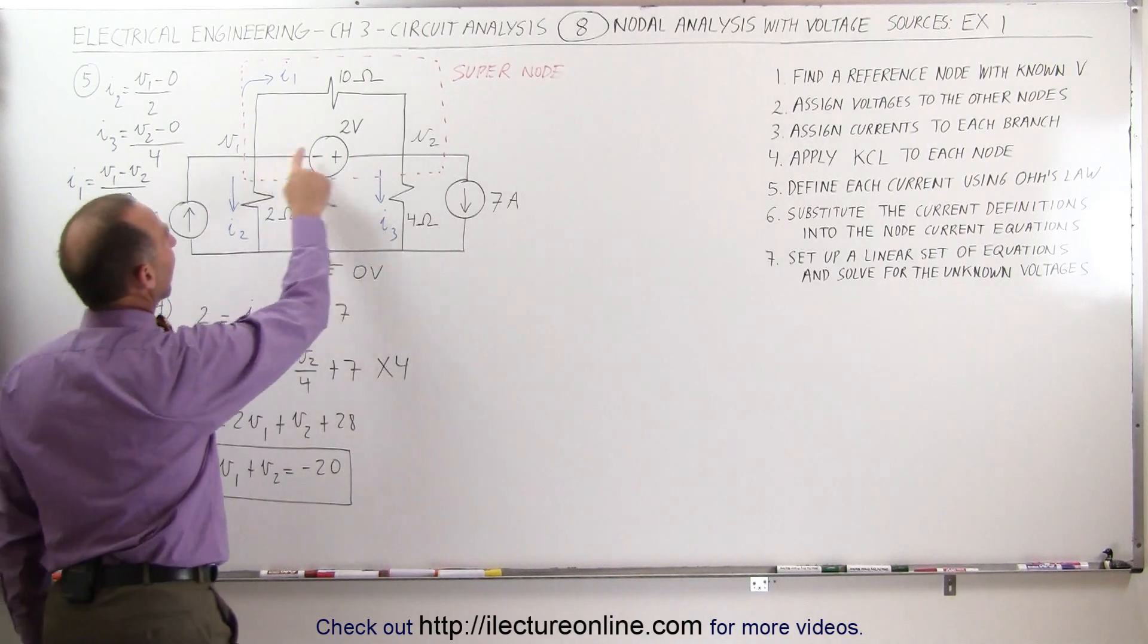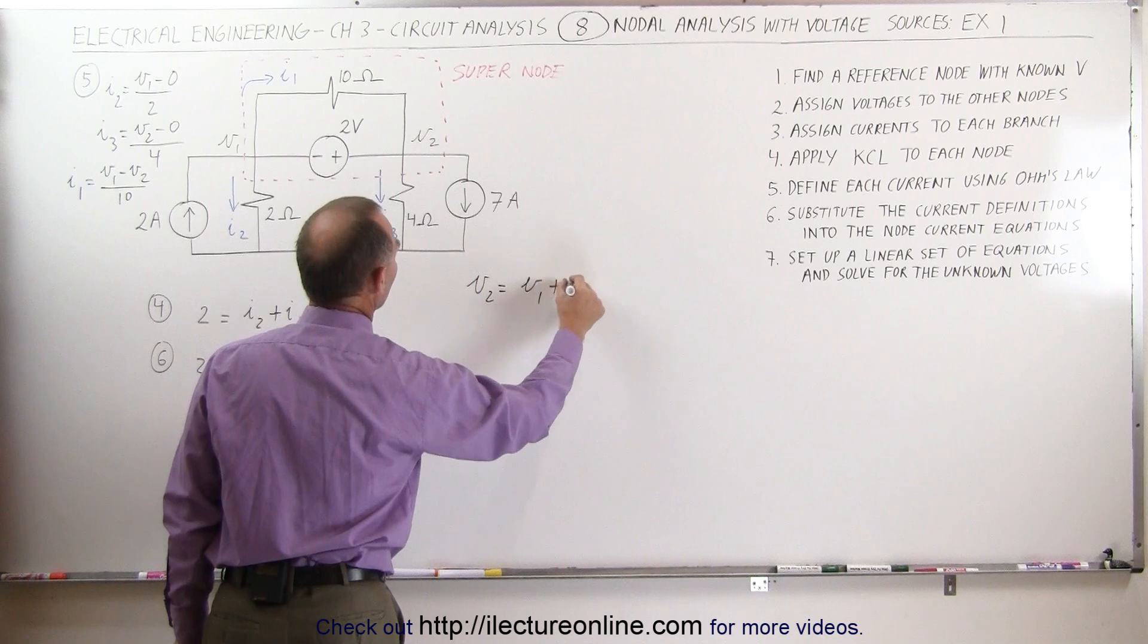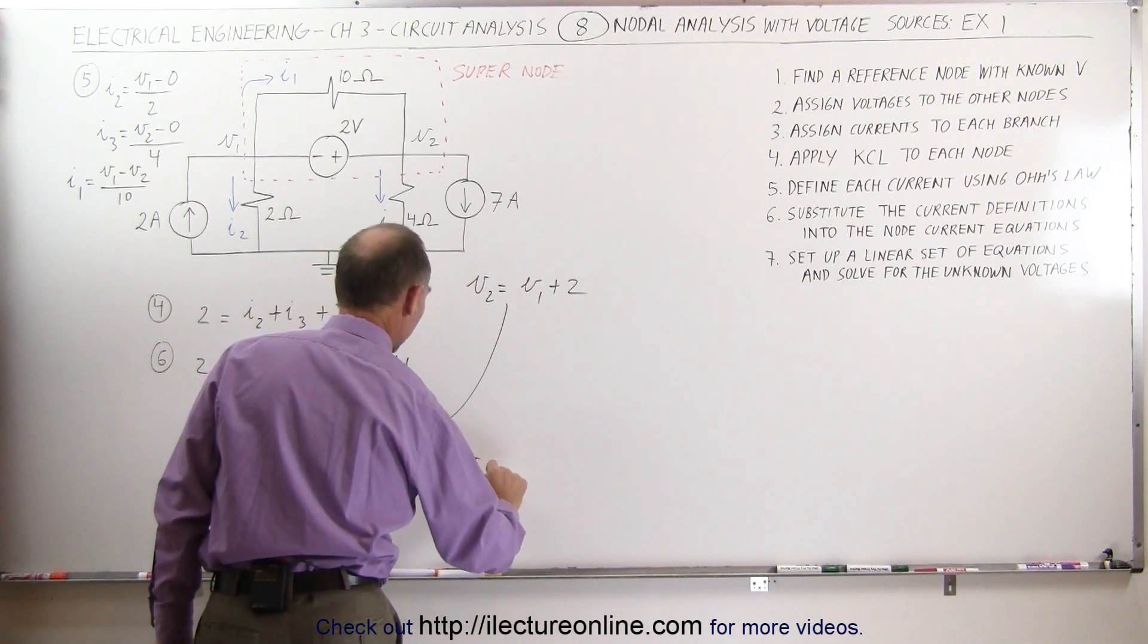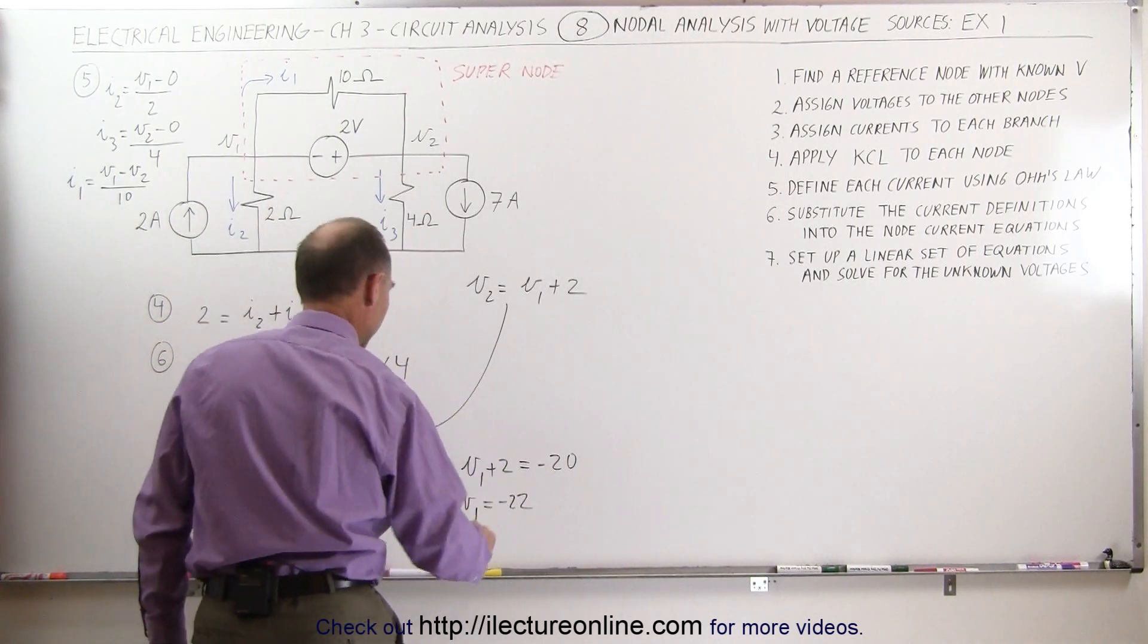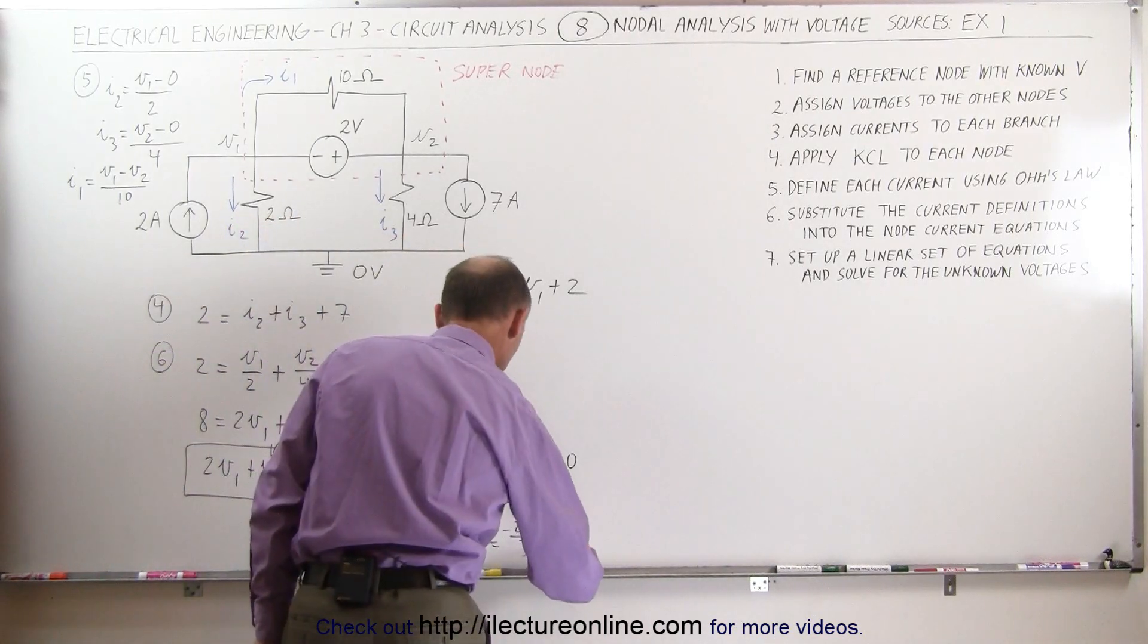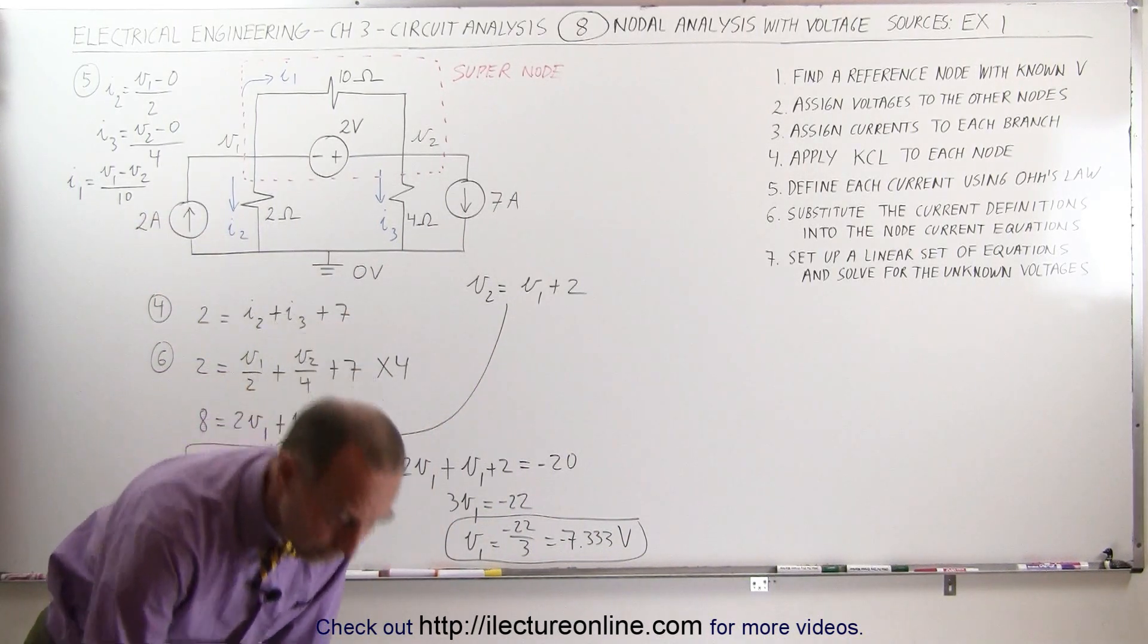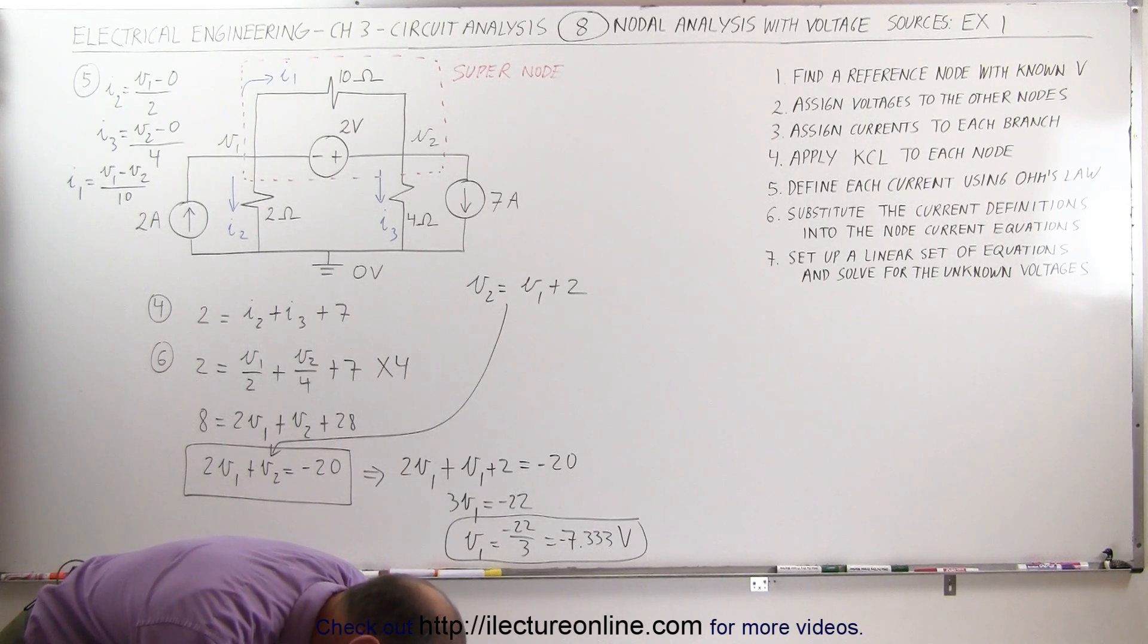However, coming back over here, I do realize that V2 must be V1 plus the 2 volts from the voltage source. V2 must equal V1 plus 2. I can then go ahead and plug that into my equation right here, which means that my equation now becomes 2V1 plus V2, which is V1 plus 2 equals minus 20. 3V1 is equal to minus 22, therefore V1 must be equal to minus 22 divided by 3, and that would be equal to minus 7.333, and that's the voltage at V1.